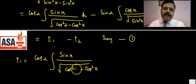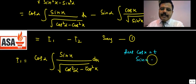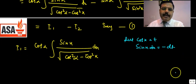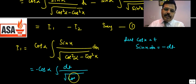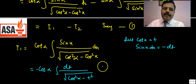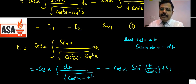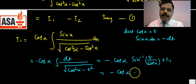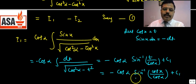For I1, put cos x = t, so sin x dx = −dt. Then I1 = −cos α · ∫(−dt) / √(cos²α − t²) = cos α · ∫dt / √(a² − x²). This is the sin⁻¹ formula. So I1 = −cos α · sin⁻¹(t / cos α) + c1, which means I1 = −cos α · sin⁻¹(cos x / cos α) + c1.